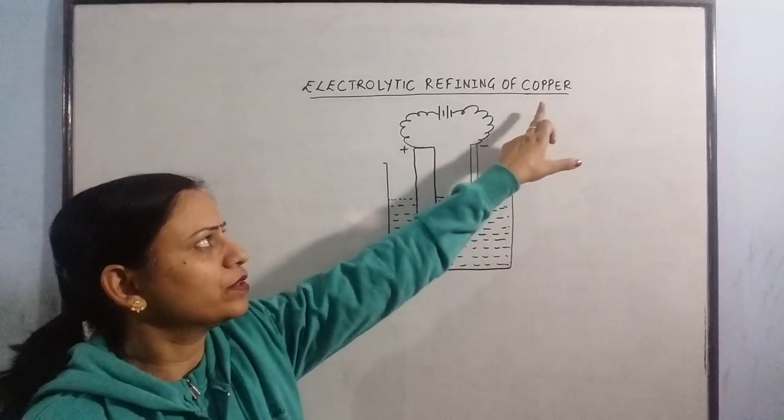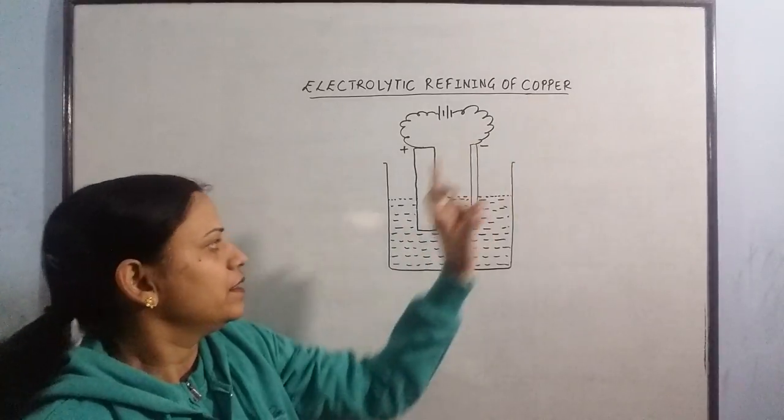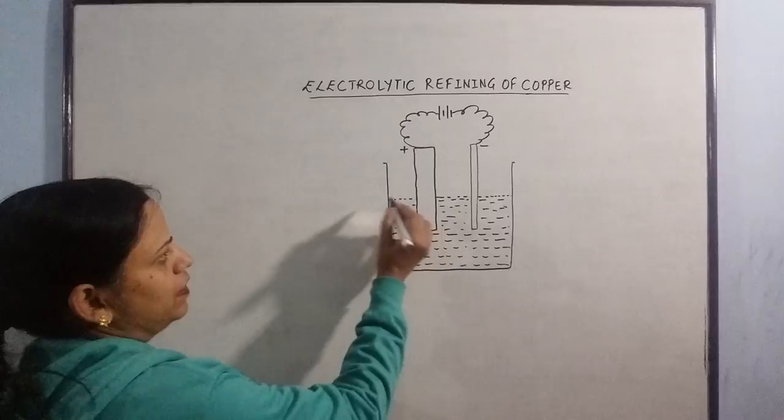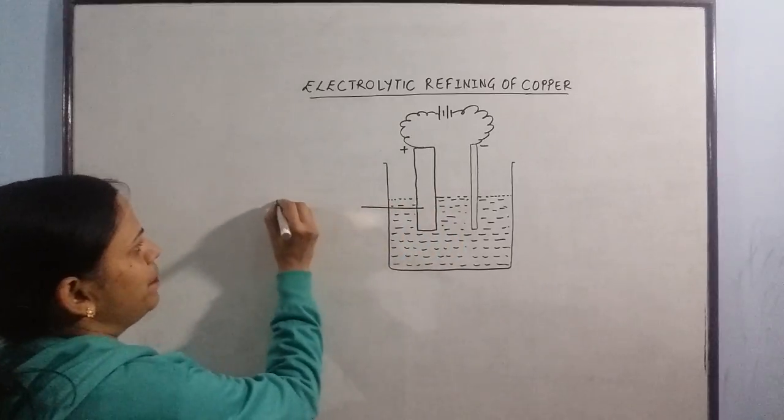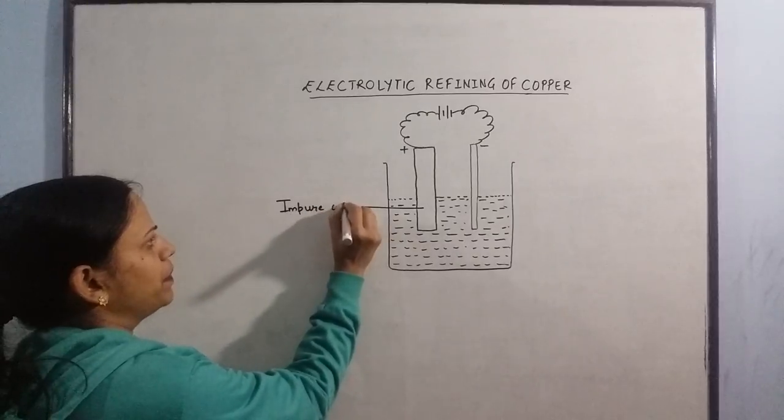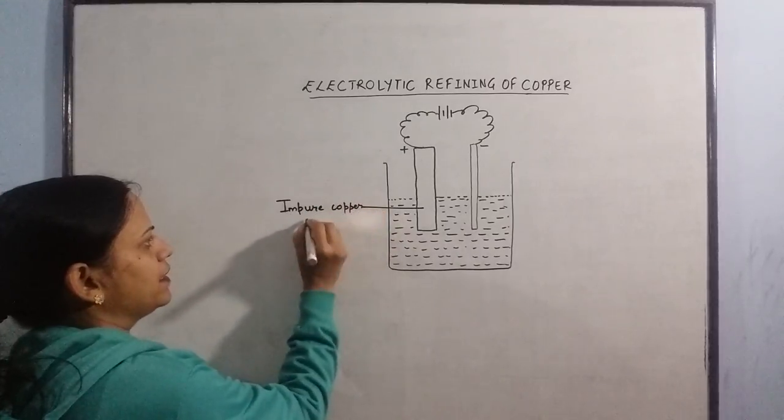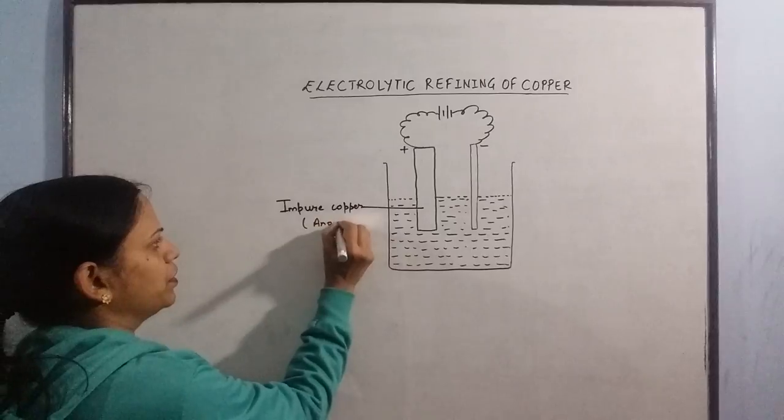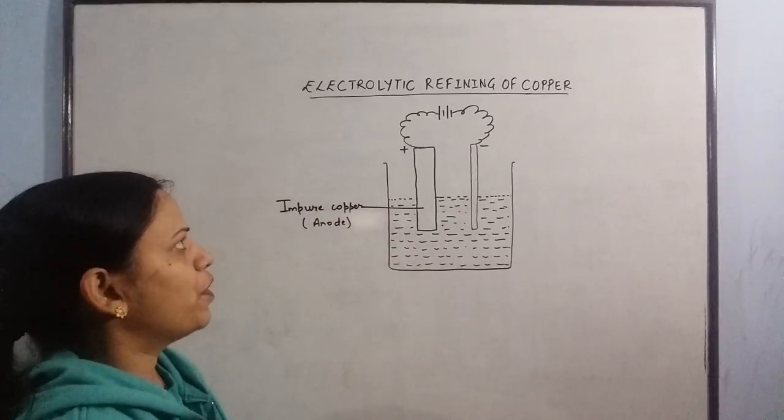Since we are carrying out the refining of copper, the thick rod is of impure copper. This is impure copper rod and this is the anode or the positive electrode.